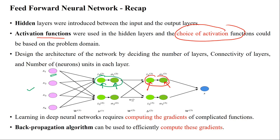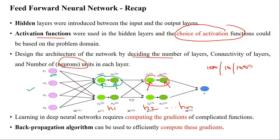Design the architecture of the neural network by deciding the number of layers — h1, h2, etc., up to hn — the connectivity of the layers, and the number of units in each layer. Each hidden layer may have 100, 10, or 1000 neurons. The number of neurons per hidden layer can be any amount based on the problem statement, but increasing the number of neurons increases the complexity of the network.